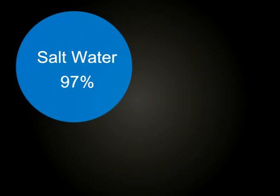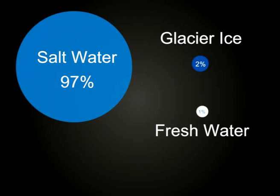97% of Earth's water is salt water. 2% of Earth's water is glacier ice. 1% of Earth's water is fresh water.